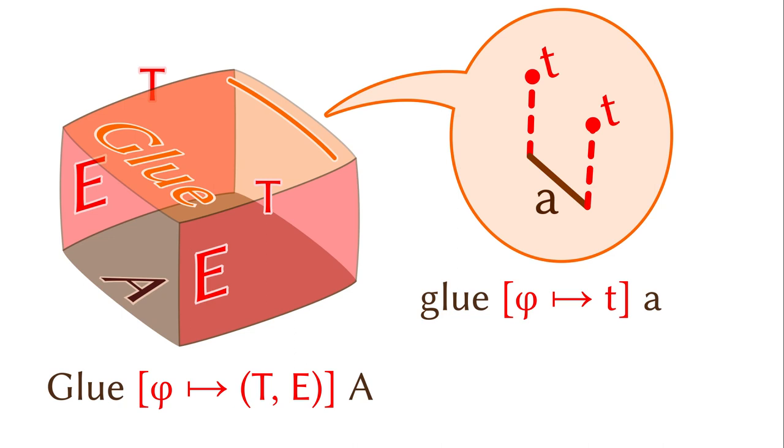The partial element is like the boundary of the box. The eliminator is called un-glue, which projects out the bottom element from an element in the glue type. So the new syntax includes capital glue, glue, and un-glue.